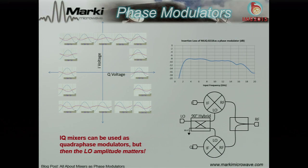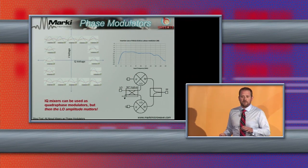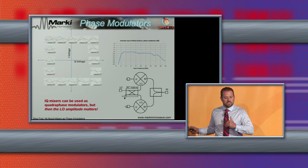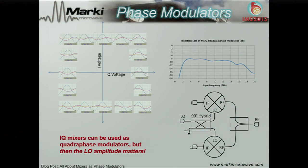The second application is as a phase modulator. IQ mixers are very popular as quadrature phase modulators. Unlike a double balanced mixer where you can only achieve zero or 180 degree phase, you can achieve arbitrary phases using an IQ mixer. The problem is this exposes a flaw: the LO amplitude doesn't matter when using it as a switch, but if you're using the LO as your input signal and modulating phase on the I and Q ports, that exposes all the imperfections in the LO quad hybrid — you'll see ripples and suck-outs in conversion loss, and it won't give anything close to datasheet performance.